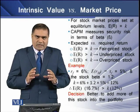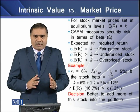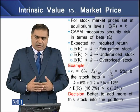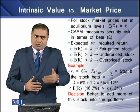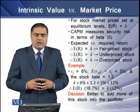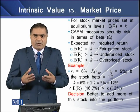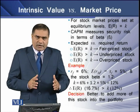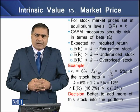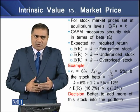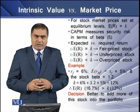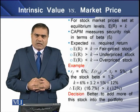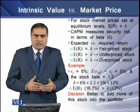We can now develop the relationship between expected return and the required rate of return, K. If expected return equals K, the stock is considered fairly priced. If expected return is greater than K, the stock is considered underpriced. And if the expected return is less than K, the stock is considered an overpriced security.